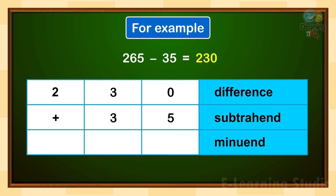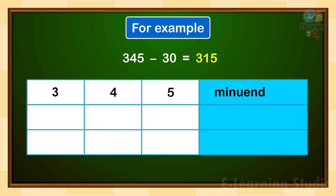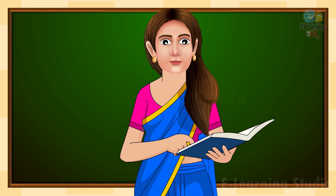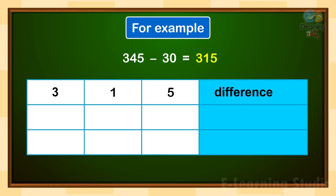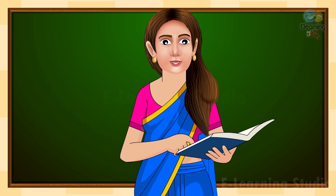Let's take another example of this property. We have 345 minus 30, which is equal to 315. Here, 345 is the minuend, 30 is the subtrahend, and 315 is the difference. When we add the subtrahend with the difference, we get the minuend: 315 plus 30 equals 345. One more benefit of this property is to cross-check your subtraction using this third property.